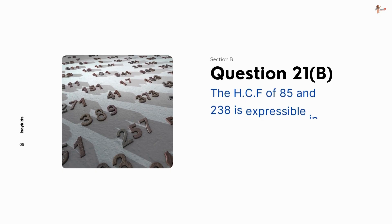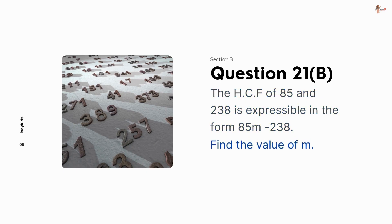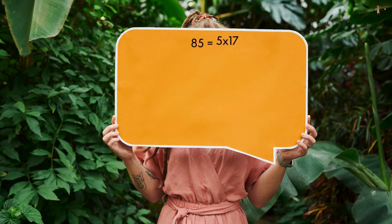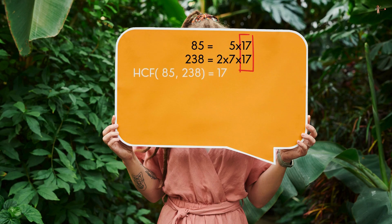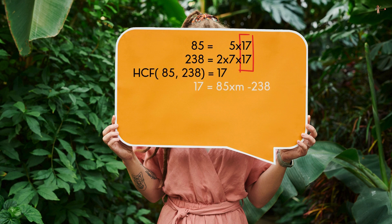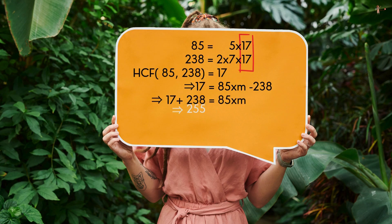The HCF of 85 and 238 is expressible in the form 85M minus 238. Find the value of M. So, 85 is 5 times 17 and 238 is 2 times 7 times 17. So, HCF would be the common factor, which is 17. Thus, 17 is equal to 85 times M minus 238. Solving this, we get M as 3.